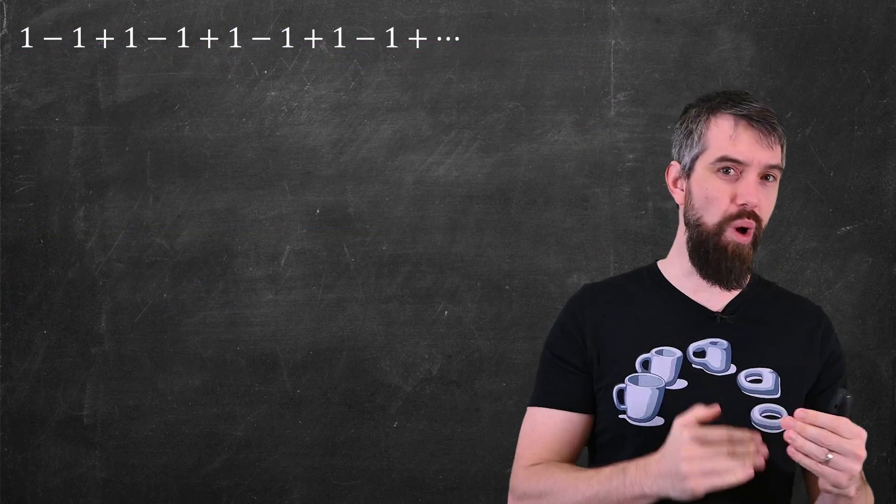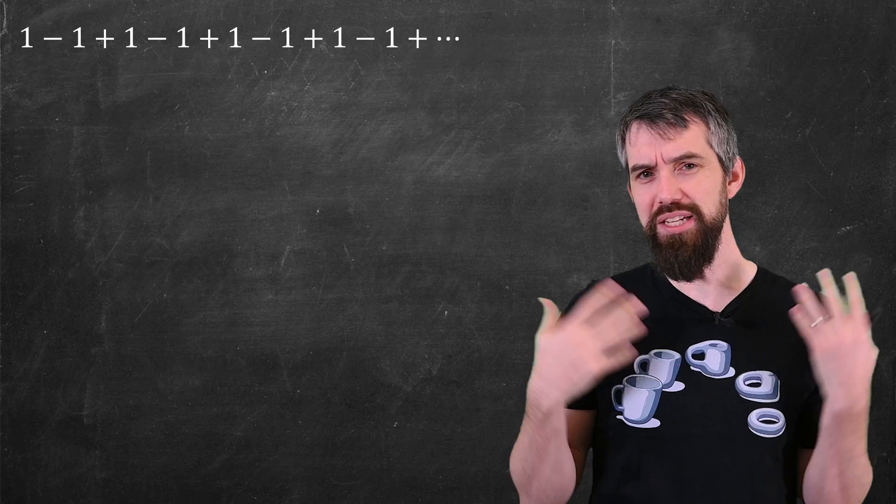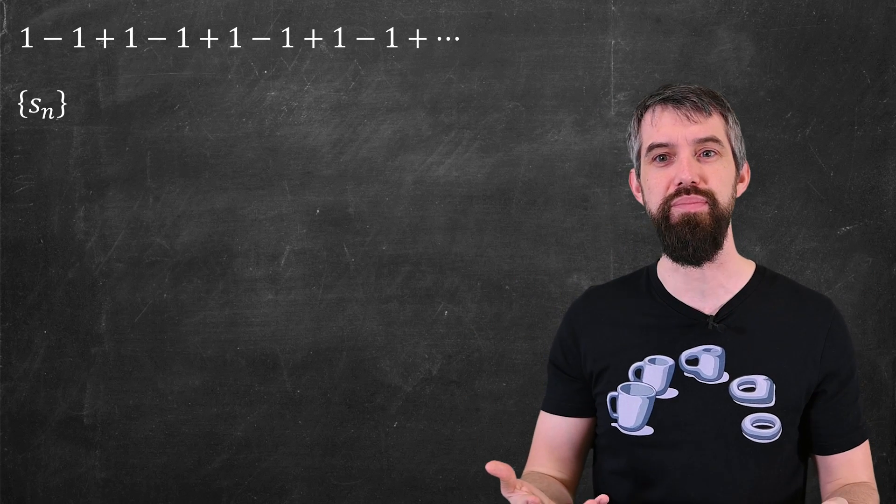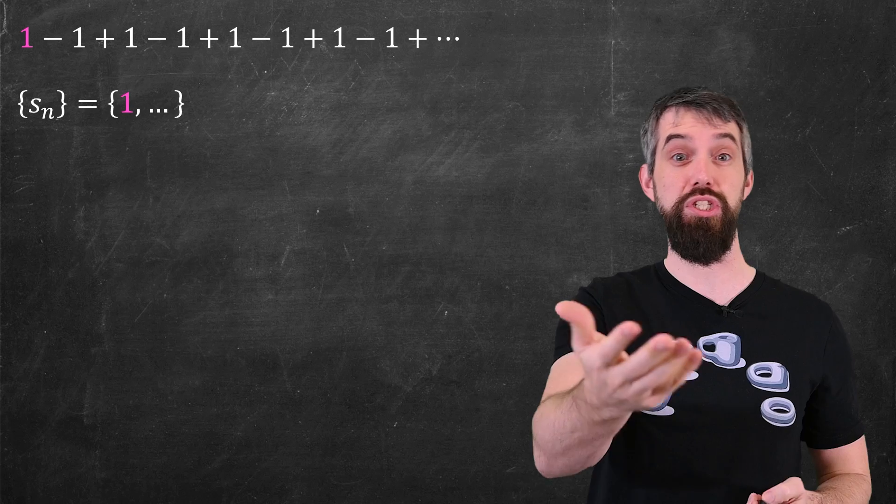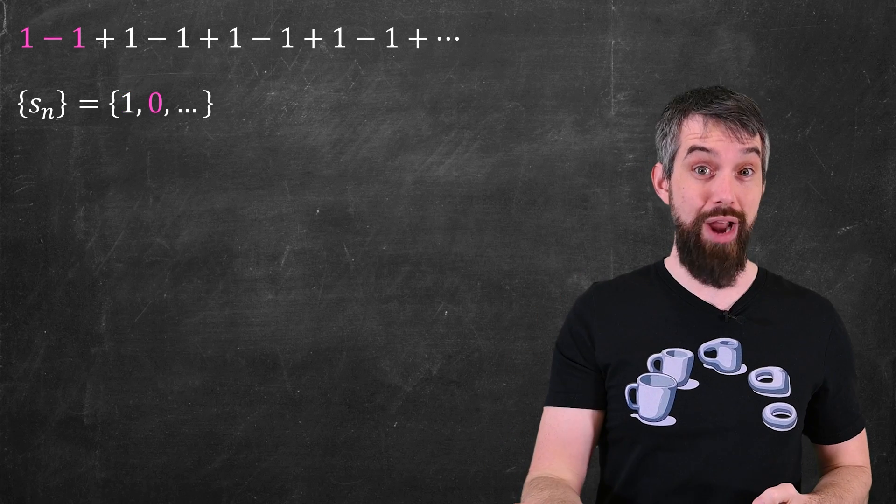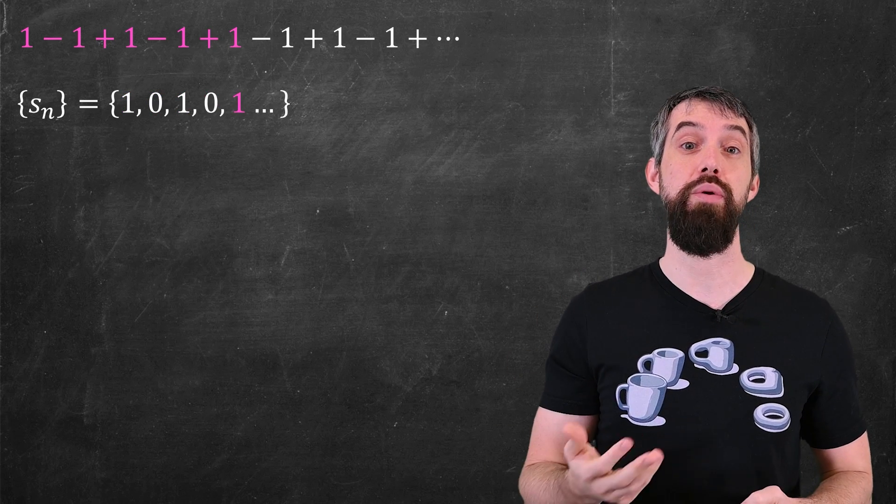This is the series 1, minus 1, 1, minus 1, 1, minus 1. And so if you go to the partial sums, the first term is just going to be the value of 1, then subtract 1, 0, 1, 0, and so forth.